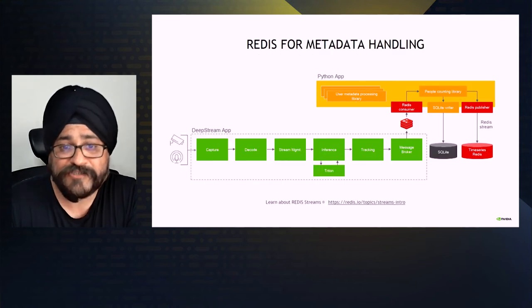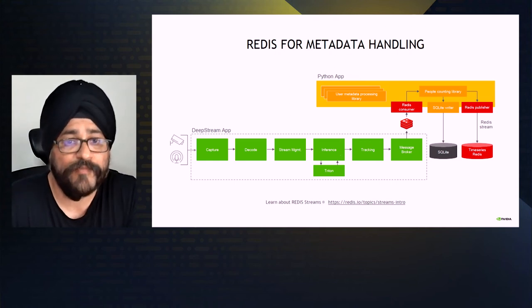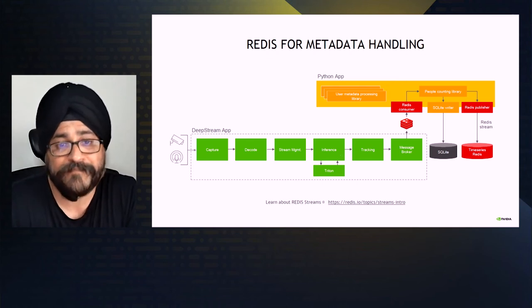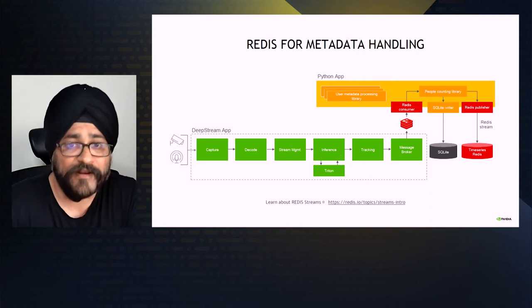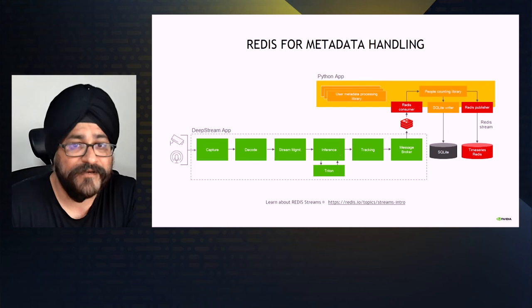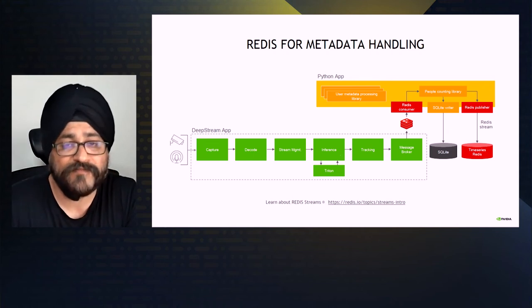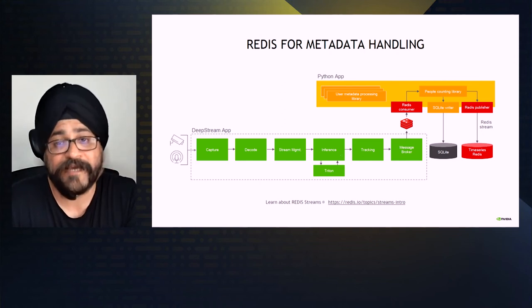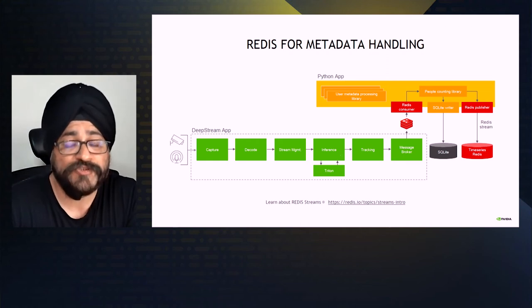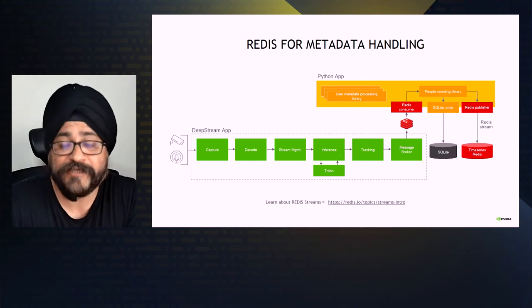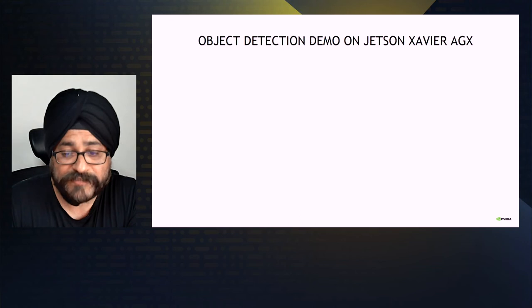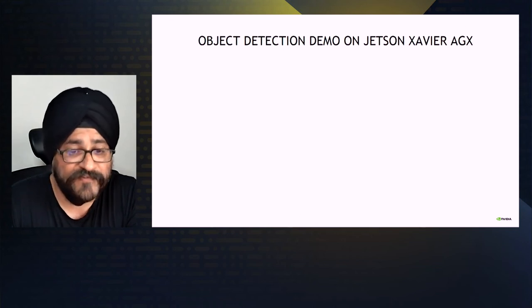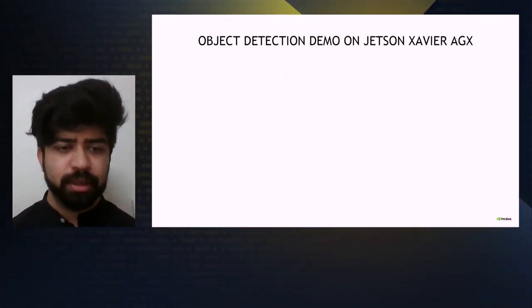This slide shows a simplified example of how Redis can communicate with the Python app that is processing the metadata created by the DeepStream app. DeepStream 6.0 comes integrated with NVIDIA RiverMax, allowing GPU-direct for inbound data. The Python app can reside on the cloud or in the same system where the DeepStream app is running. The Redis message broker creates a connection with the Redis consumer within the Python app and shares the metadata for the apps to consume. In this example, the metadata is being used to create a people counting app and store such information into a database.